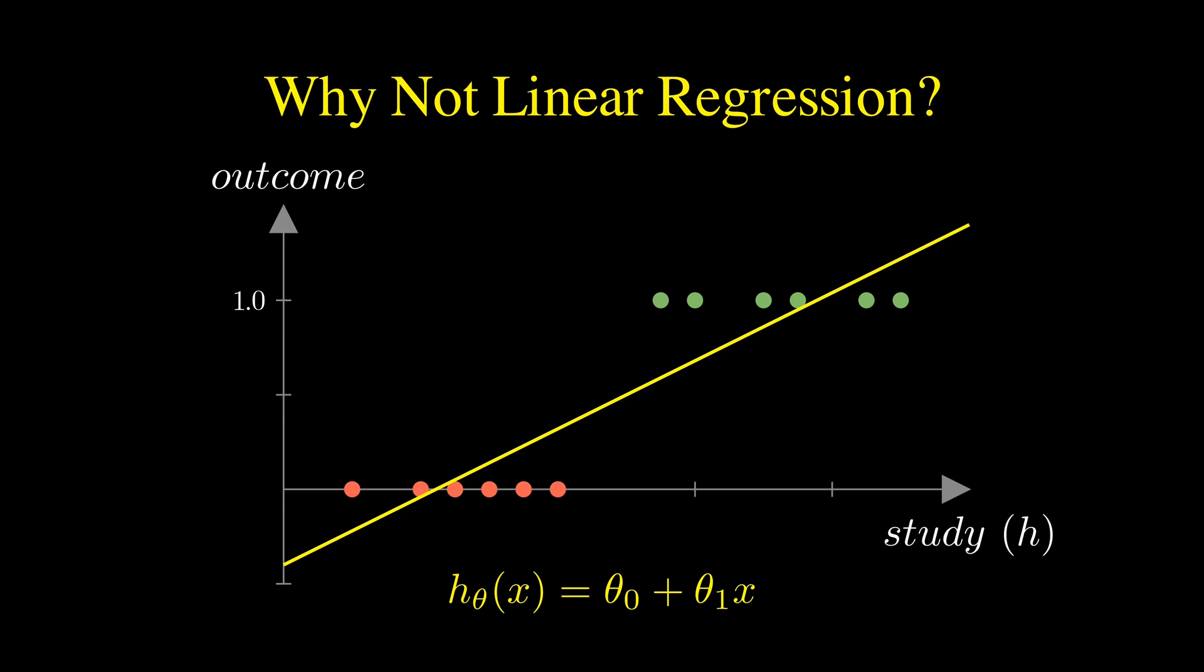A straight line continues forever in both directions. For a student who studies a lot, the line might predict a value of 2 or 3. What does a probability of 200% mean? Even worse, for 0 hours, it might predict a negative value. We need a function that bounds our output between 0 and 1, representing a valid probability.